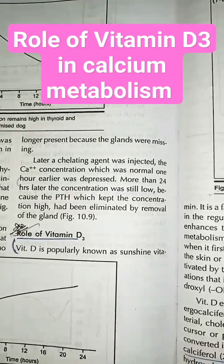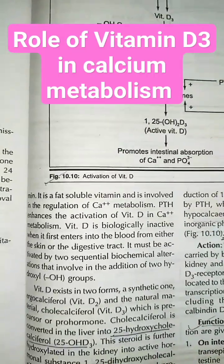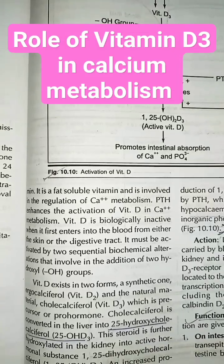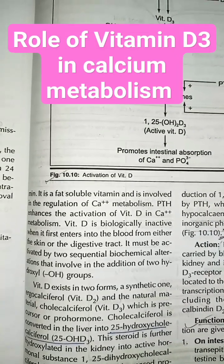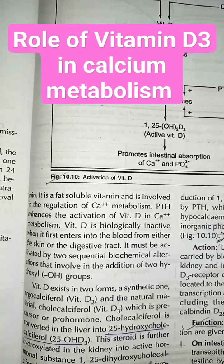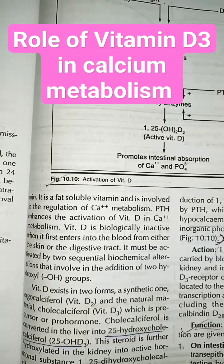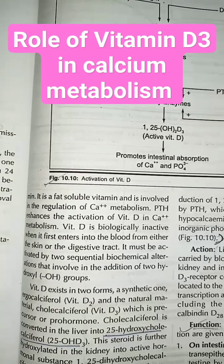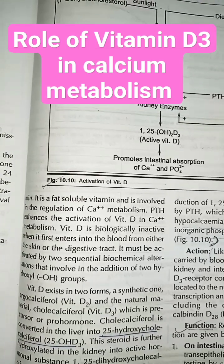Vitamin D is popularly known as the sunshine vitamin. It is a fat-soluble vitamin and is involved in the regulation of calcium metabolism. PTH enhances the activation of vitamin D in calcium metabolism. Vitamin D is biologically inactive when it first enters the blood.